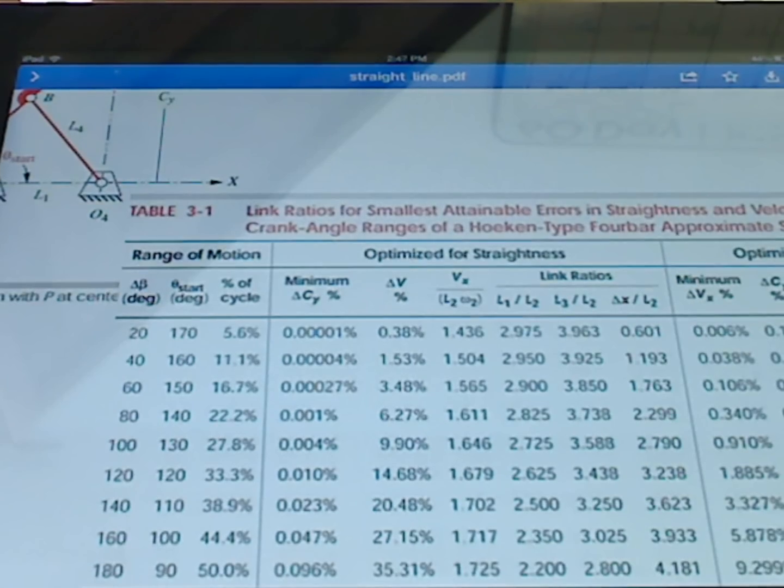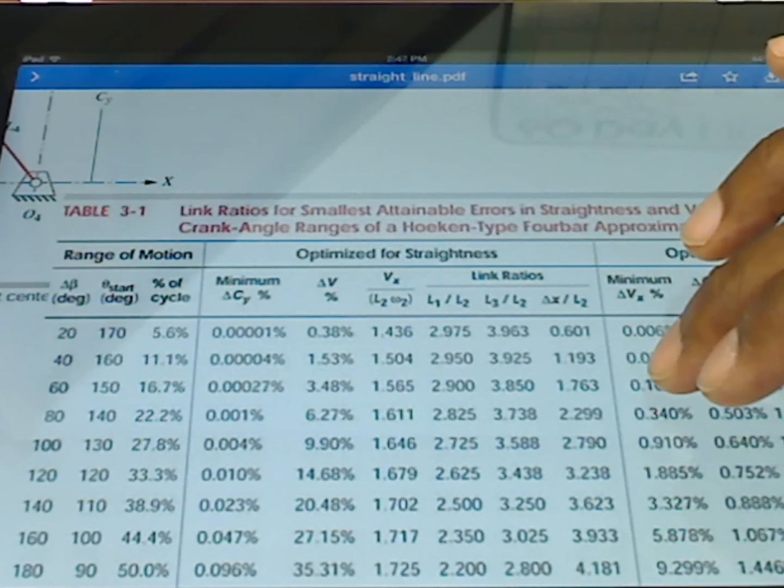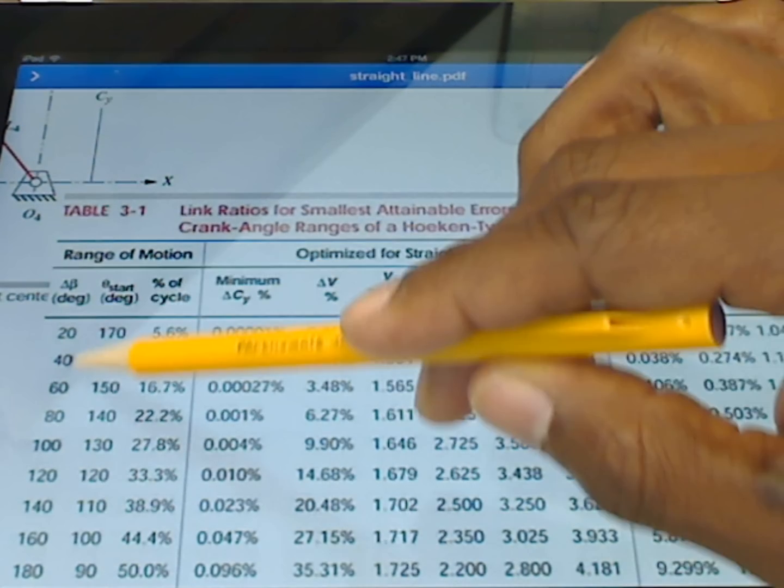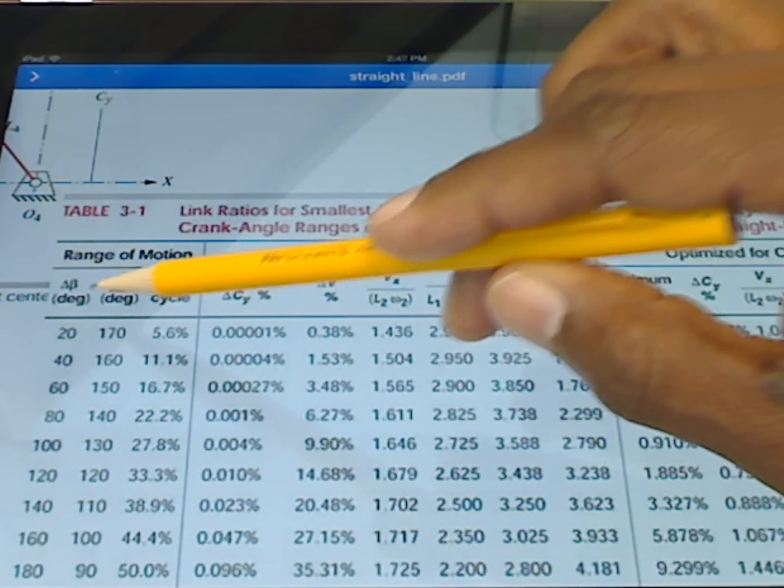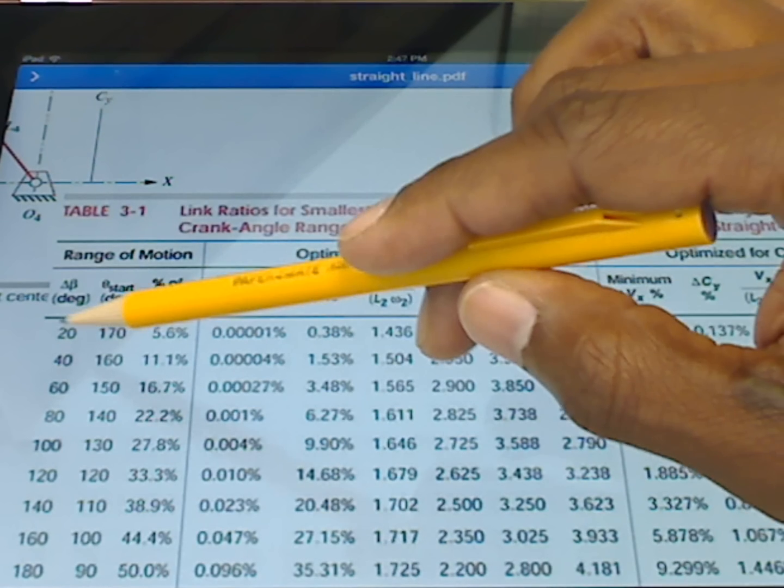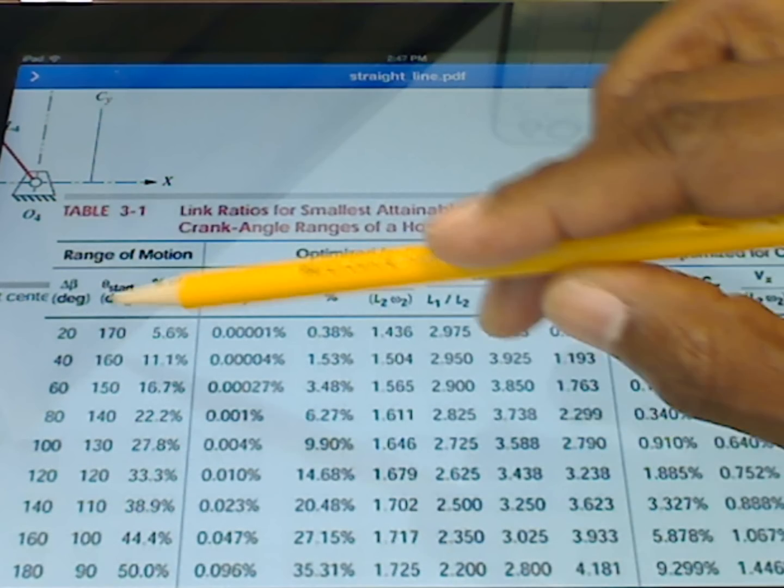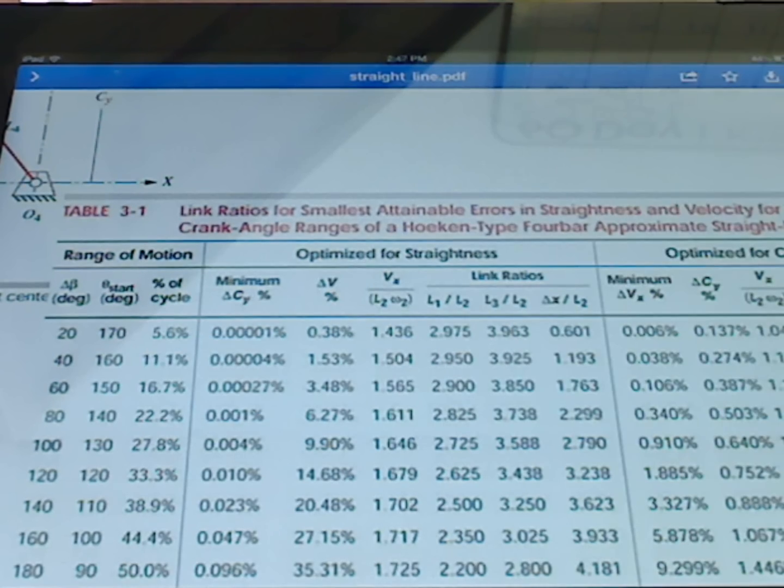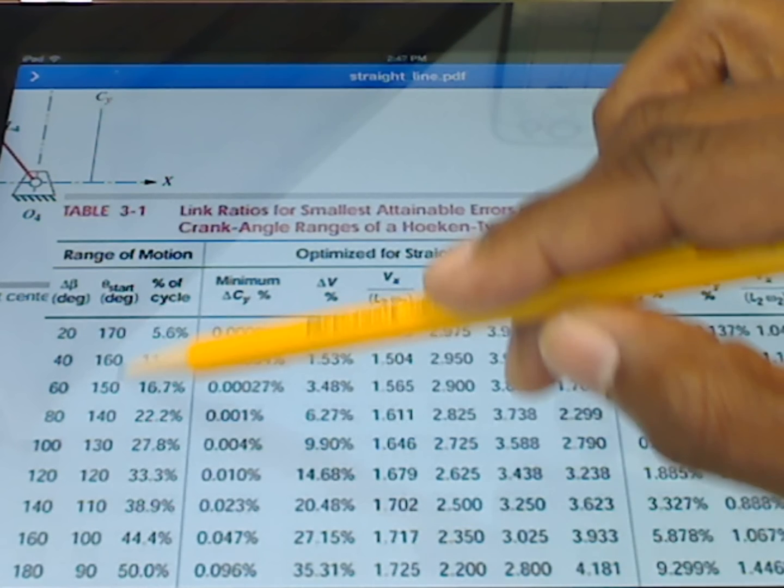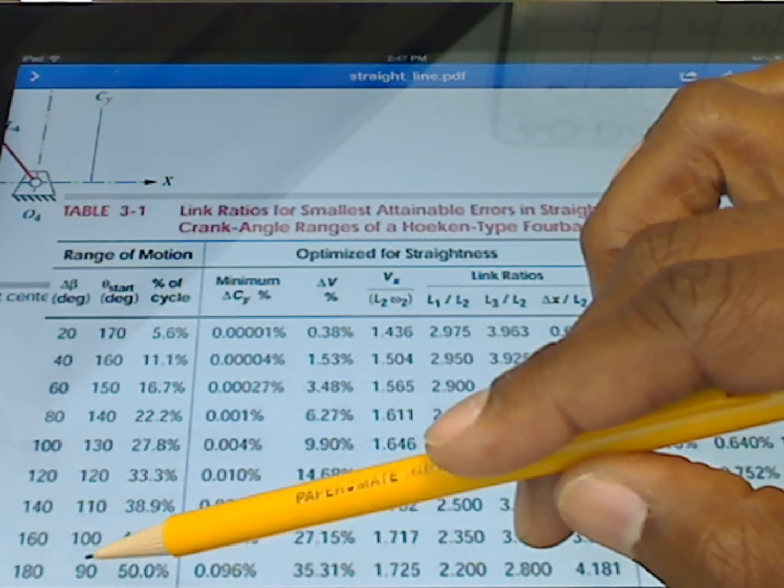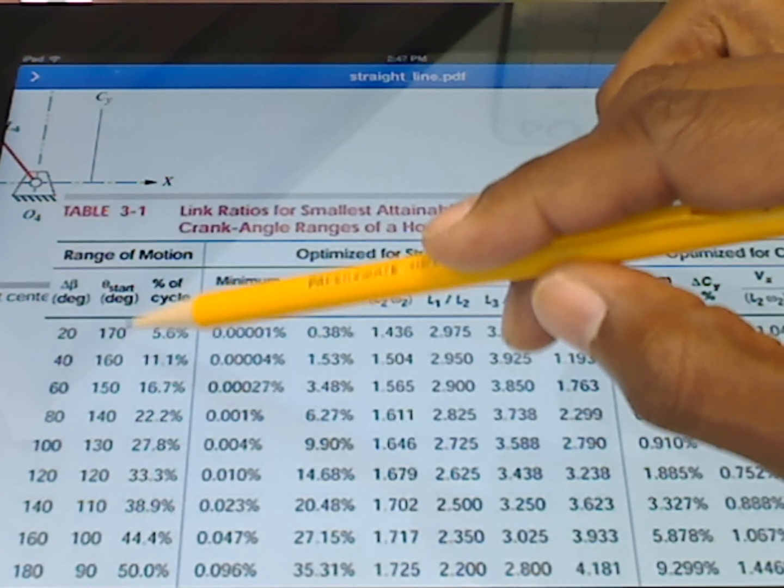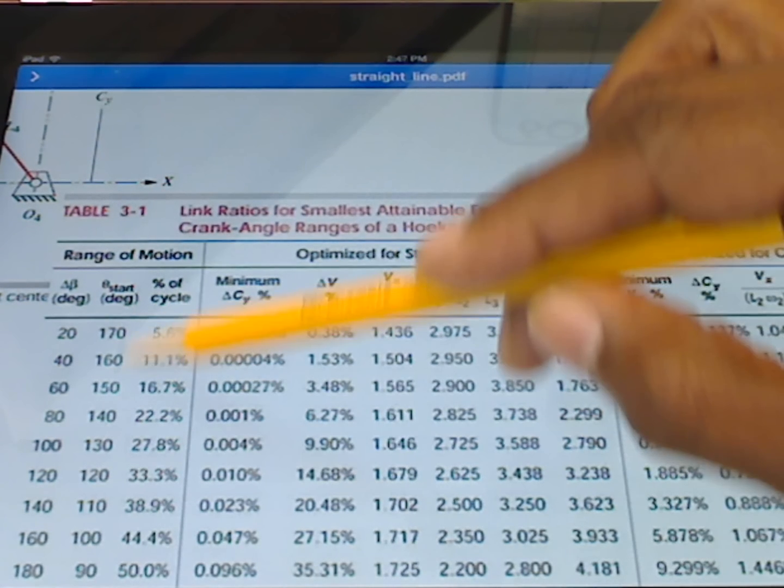This table contains the link ratios for creating the Hoeken straight line linkage. Here we see different amounts of the amount of crank rotation that will give us a straight line anywhere from 20 degrees all the way to 180 degrees. And of course, we can interpolate here to get other values. We also see differences in our start value, the place where the crank angle begins the straight line portion here.